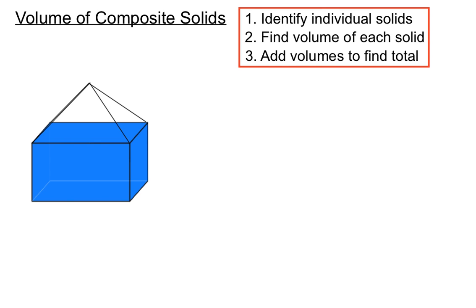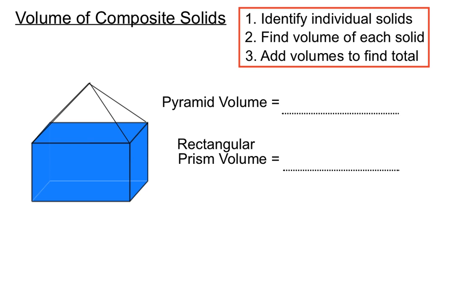Here for example we have some individual solids. I think you can see a blue rectangular prism there, and sitting on top of that is a pyramid. So basically we find the pyramid volume - there's a video to show you how to do that - and then the rectangular prism volume. Find that separately and put a big plus between them to find that total volume.